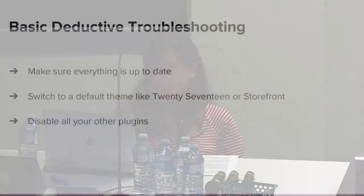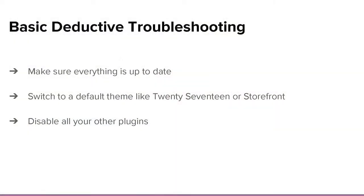WooCommerce actually has a guide called the WooCommerce Self Service Guide, which covers the top three issues that happen with WooCommerce and how to find them — it's a really great place to start. The first thing on the list is make sure everything is up to date. Plugins update all the time; they release security updates or bug fixes, and it could be a bug or a conflict with another plugin. If you see a plugin needs updating, you should probably do that because it might take care of your problem.